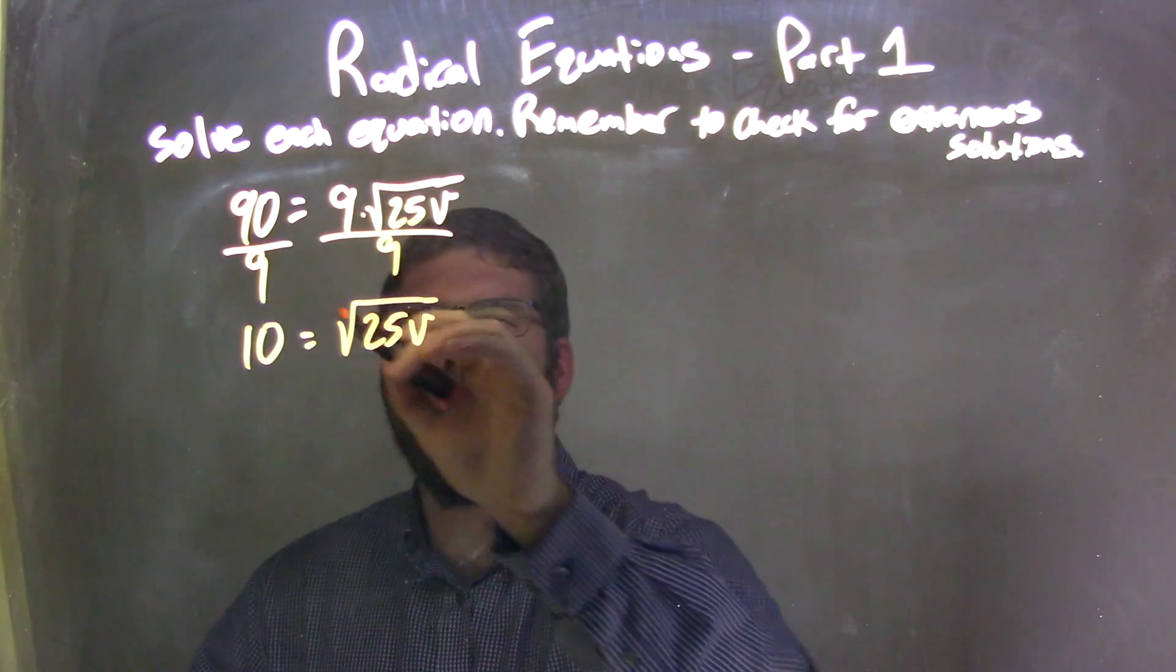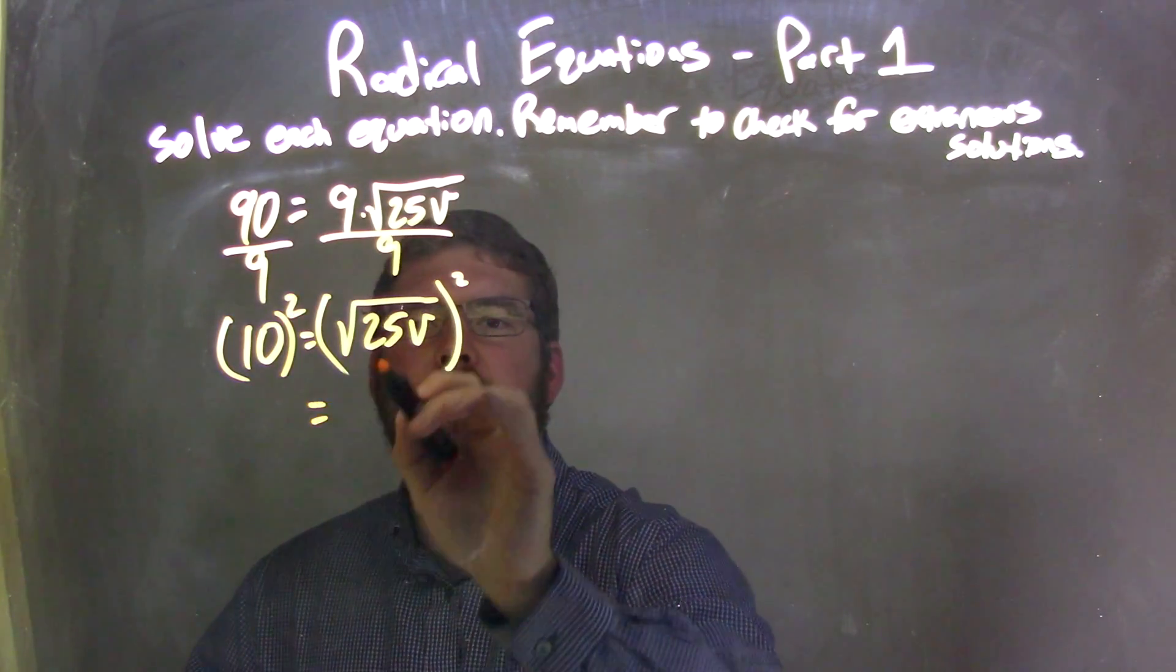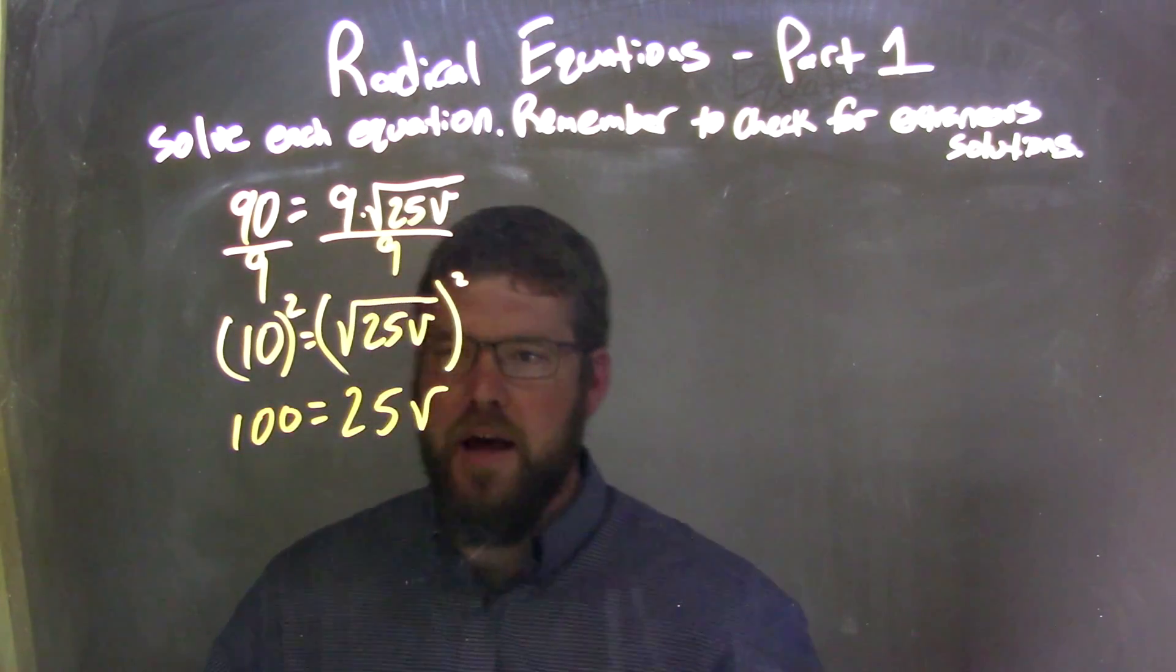I need to square both sides to eliminate that square root. Kind of makes sense, doesn't it? 25V is left on the right, but 10 squared is 100 on the left.